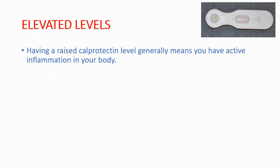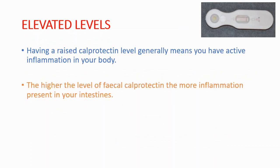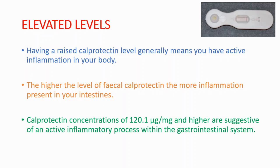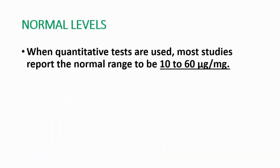Having a raised calprotectin level generally means you have active inflammation inside of your body. The higher the level of fecal calprotectin, the more inflammation present in your intestines. Calprotectin concentrations of 120.1 microgram per milligram and higher are suggestive of an active inflammatory process within your intestinal system. The normal range is between 10 to 60 microgram per milligram.